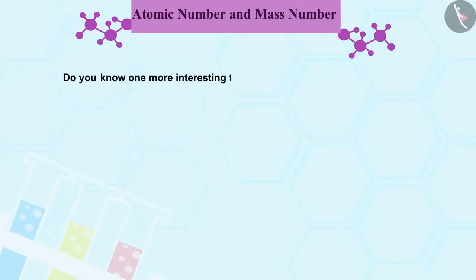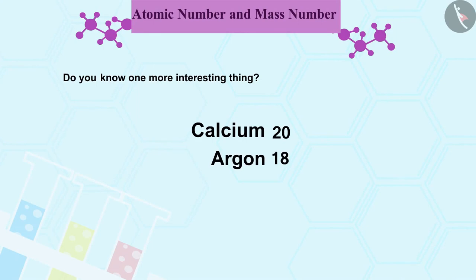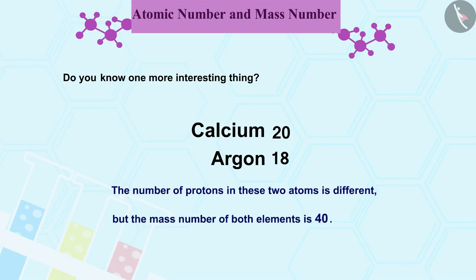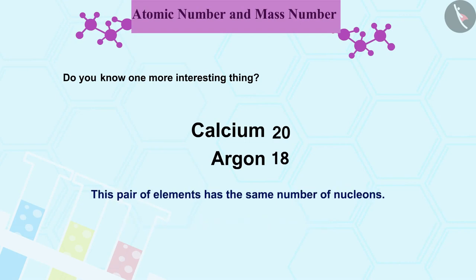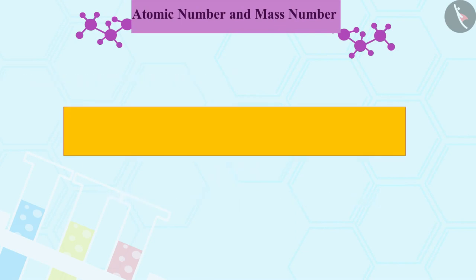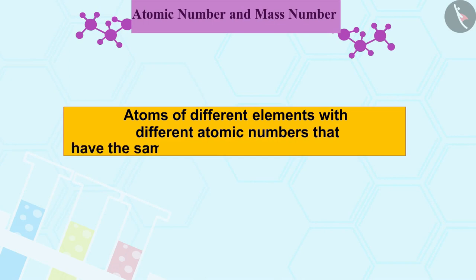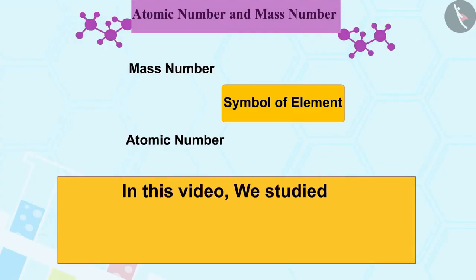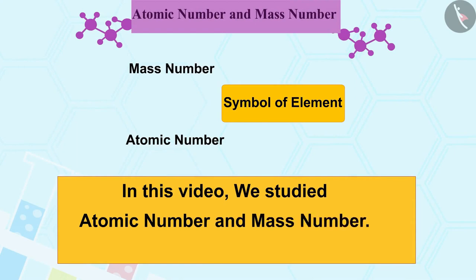Do you know one more interesting thing? Let us consider two elements: calcium with atomic number 20 and argon with atomic number 18. The number of protons in these two atoms is different but the mass number of both elements is 40. In other words, this pair of elements has the same number of nucleons. Atoms of different elements with different atomic numbers that have the same mass number are called isobars. In this video we studied atomic number and mass number.